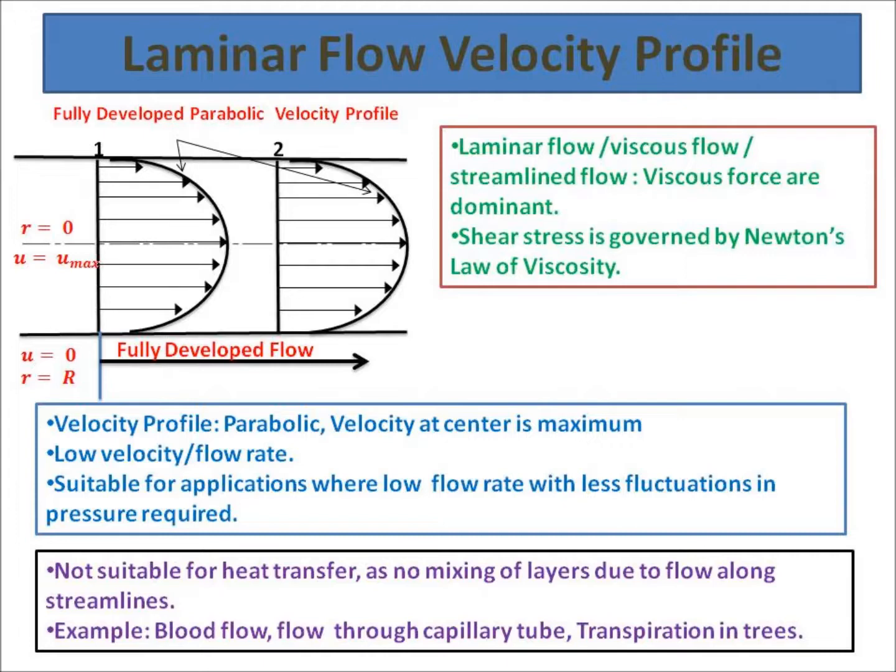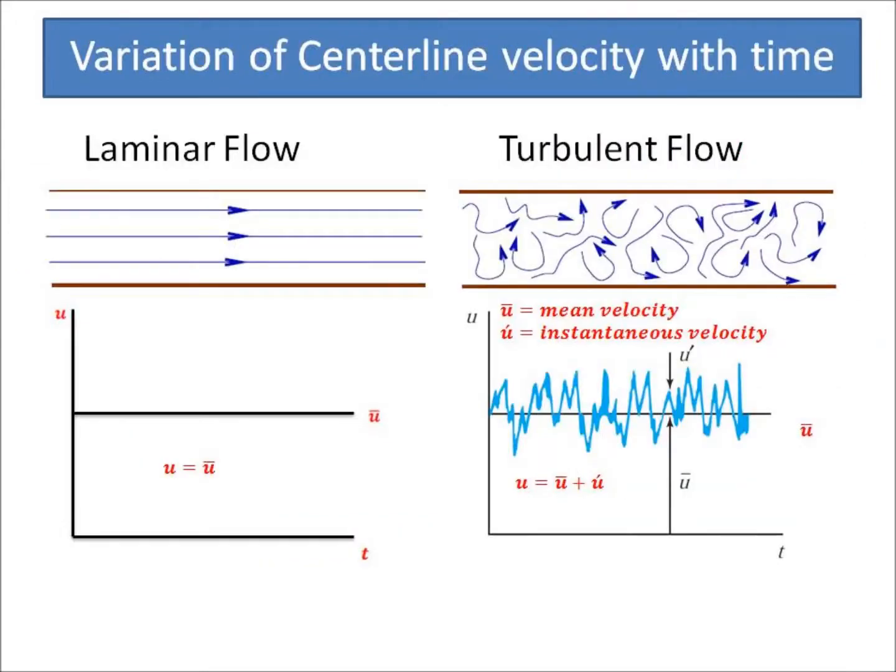This flow occurs at low velocity or low flow rates where less fluctuation in pressure is required. Examples include blood flowing in veins, liquid flowing in capillary tubes, and ink flow in ballpoint pens. It does not find any application or very less application in heat transfer.